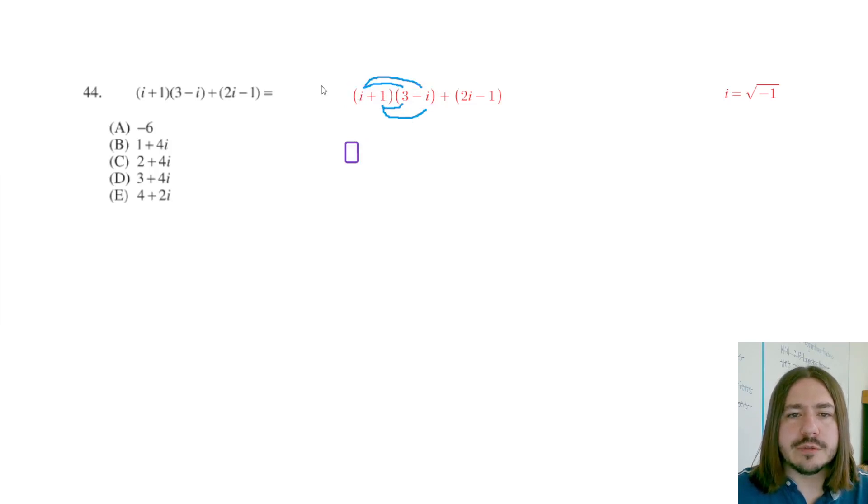So i times 3 is going to be 3i. i times negative i is going to be negative i squared. 1 times 3 is going to be 3. And 1 times negative i is going to be negative i. So that's all this. And then since we're just adding these other two terms, I'm going to drop the parentheses and just write this as 2i minus 1.